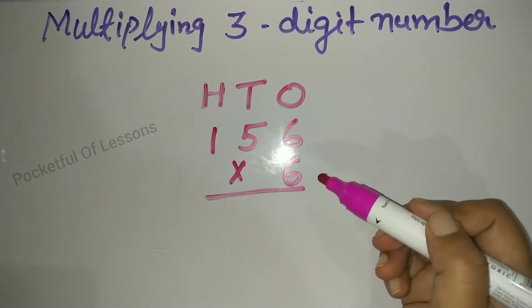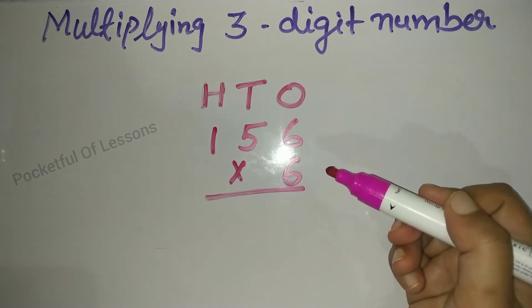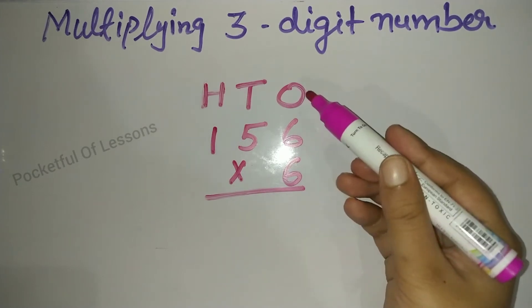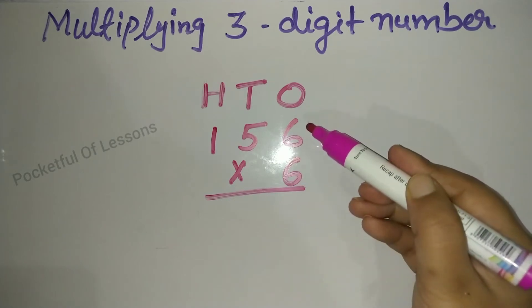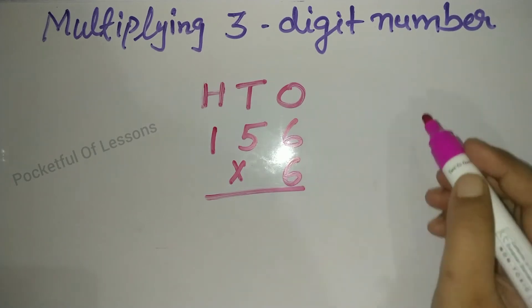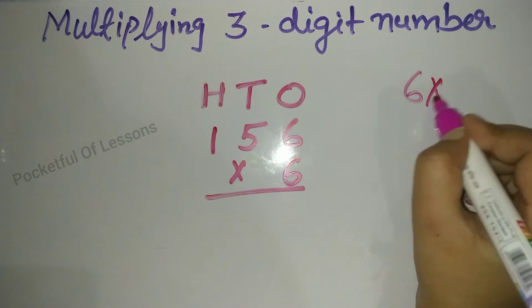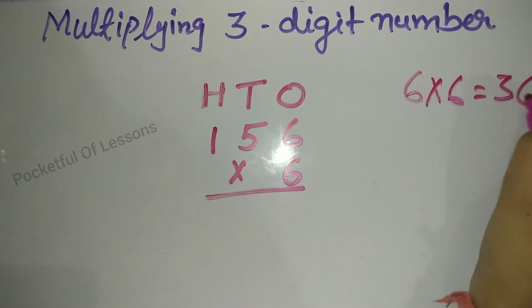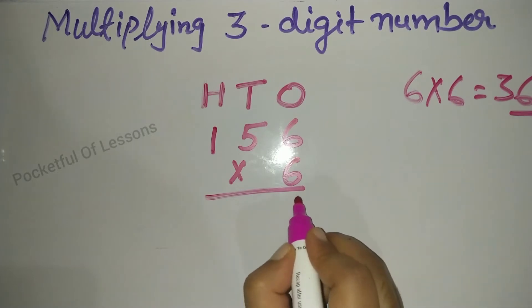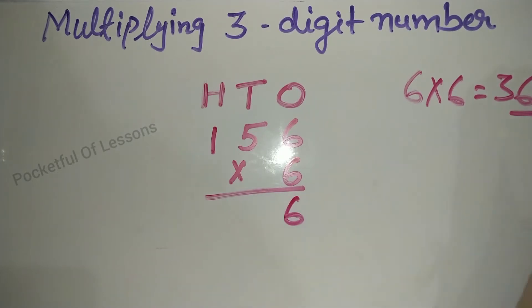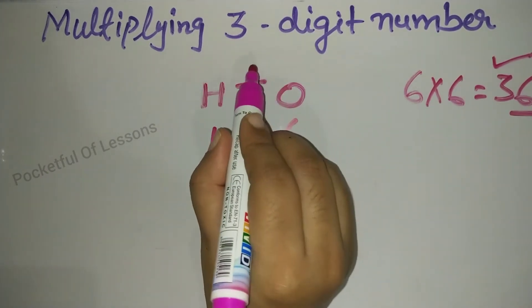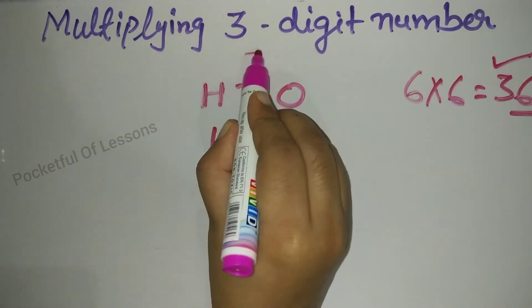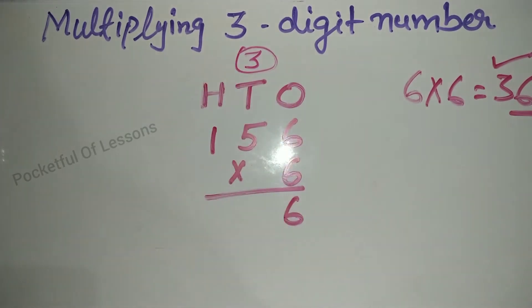So when you start to multiply, we always start from which side? The ones place. So we start from the ones place. So 6 multiply by 6 — from the 6 table, we add 6 times, so we get 36. The ones place digit 6 we write here in the ones column. The tens place digit 3 we carry forward.